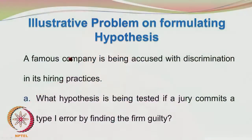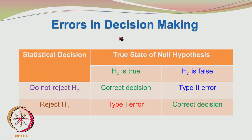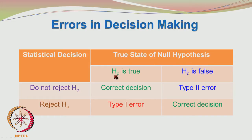Coming back to the errors in decision making, we have the table here. The first column says statistical decision and the true state of null hypothesis is given in the second and third columns. The true state of null hypothesis may be H0 is true or H0 is false. The null hypothesis, represented by H0, is the original base hypothesis.